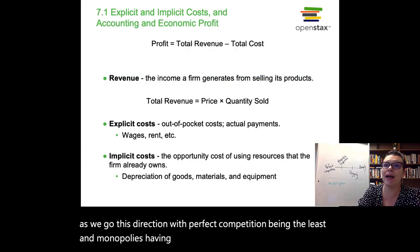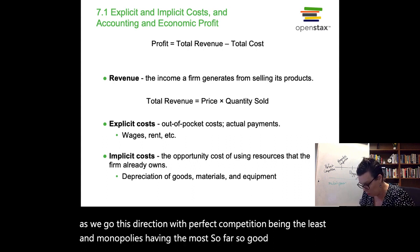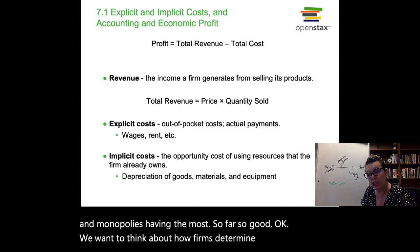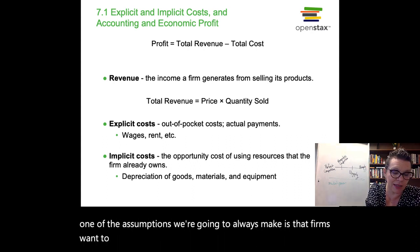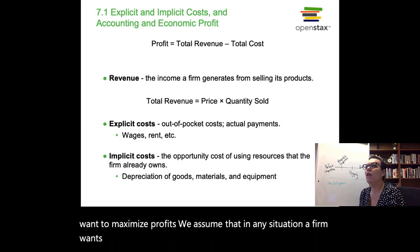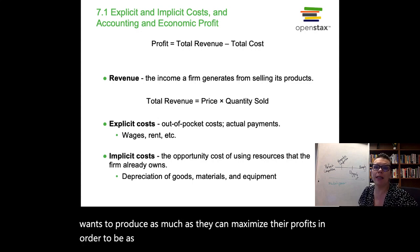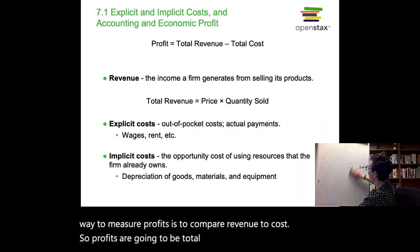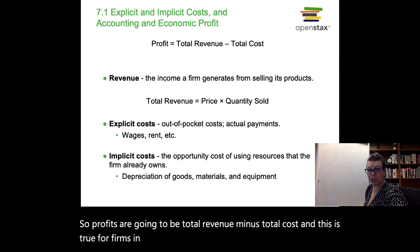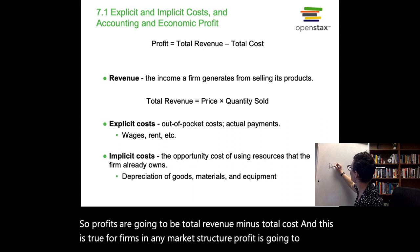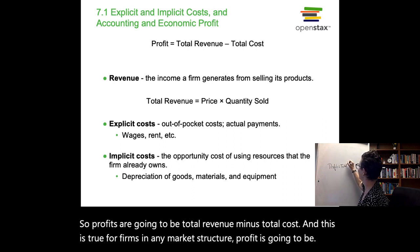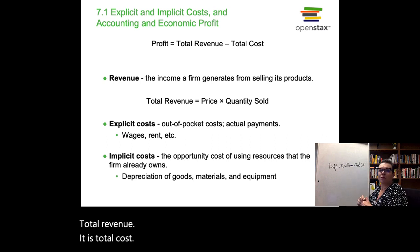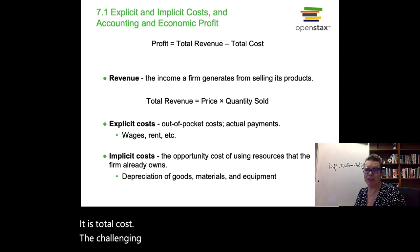Now we want to think about how firms determine their success. One of the assumptions we're always going to make is that firms want to maximize profits — in any situation, a firm wants to produce as much as possible to maximize profits. That begs the question: how do we measure profits? The easiest way is to compare revenue to costs. Profit is going to be total revenue minus total cost, and this is true for firms in any market structure. The challenging thing is how economists define these two things.